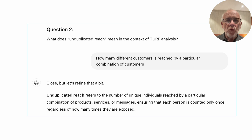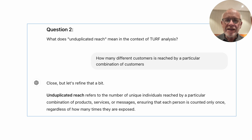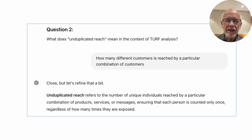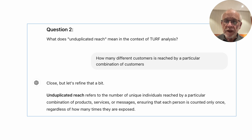The second question is: what does unduplicated reach mean in the context of TURF analysis? And I've made a typo - I should have said how many different customers is reached by a particular combination of products or services, but I said 'combination of customers' instead. ChatGPT is very polite - it says I'm close but let's refine that a bit, and it gives me the correct answer. By this Q&A system I can get a sense of whether I need to go back and learn more.